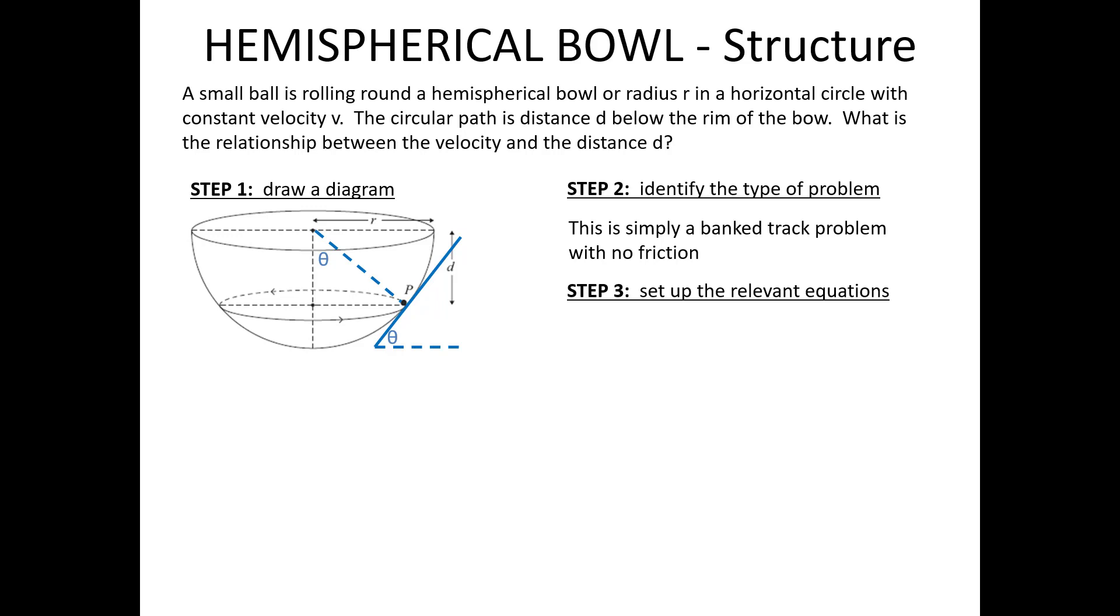It's a banked track with no friction. First thing we do is we mark in our two forces that determine the motion. That is the weight acting vertically downwards and the normal reaction acting towards the centre of the sphere. Now we set up the relevant equations. Resolving vertically, we get R cos θ equals mg. And resolving horizontally, we get R sin θ equals mv squared over x. As you recall, that is simply force equals mass times acceleration.